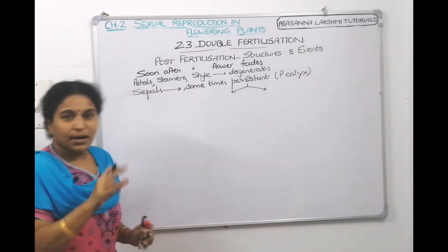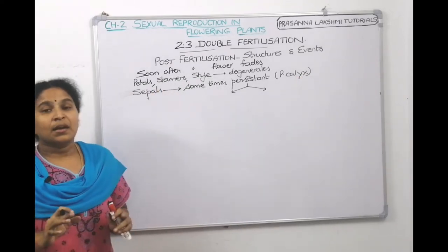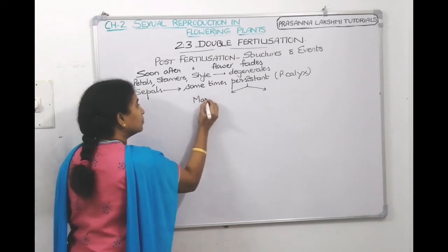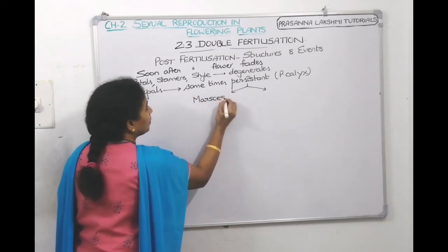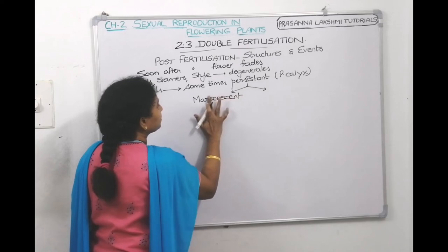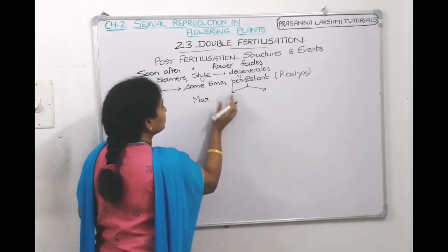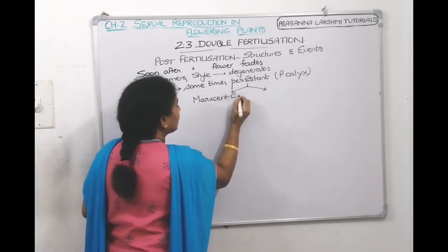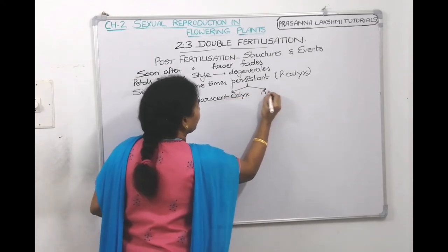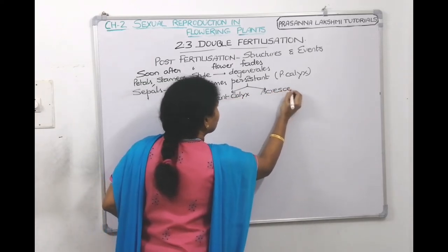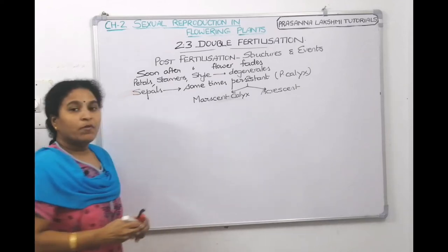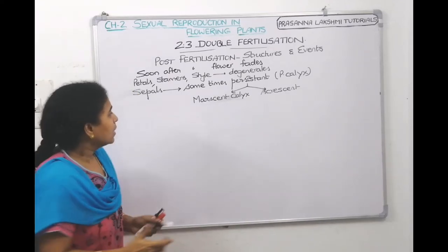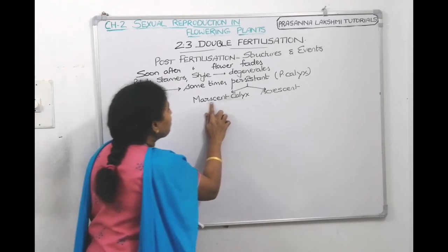Why didn't I mention the sepals? Sepals usually also degenerate, but sometimes they can persist — when they do, we call it persistent calyx. Persistent calyx is divided into two types: marcescent calyx and accrescent calyx.